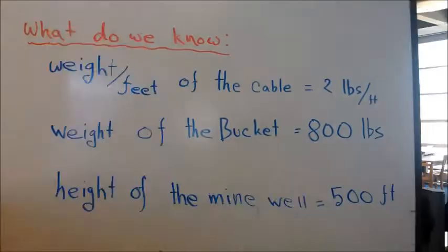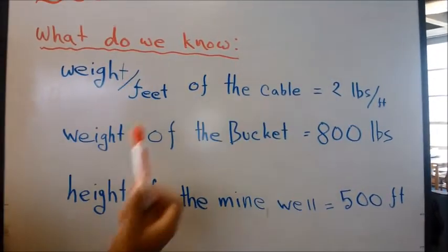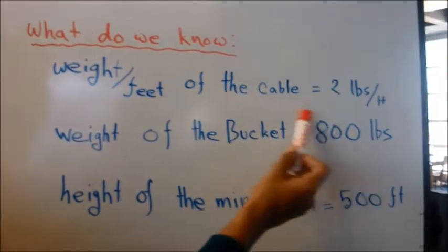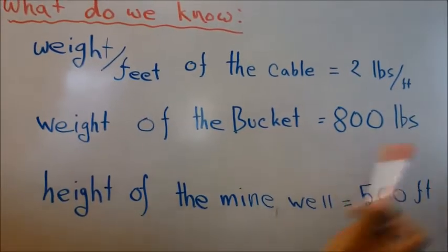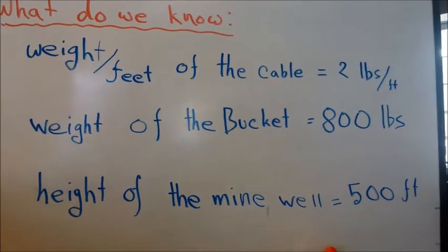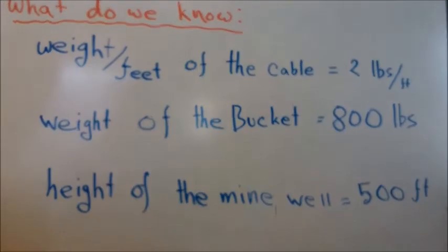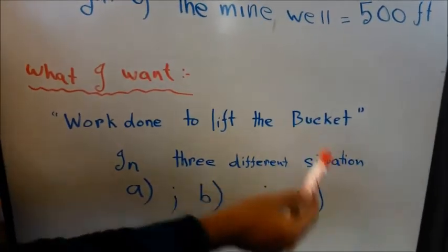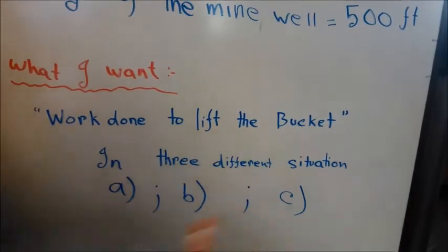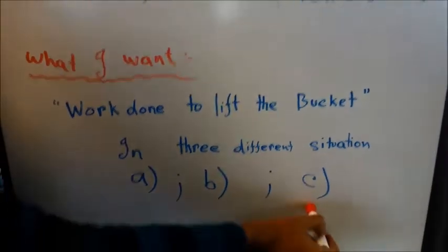So let's get to it. In part two, what do we know? Weight per foot of the cable is 2 pounds, weight of the bucket is 800 pounds, height of the mine well equals 500 feet. What I want is work done to lift the bucket in three different situations: A, B, and C.